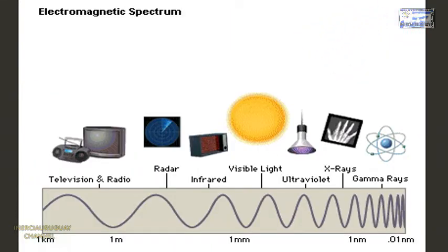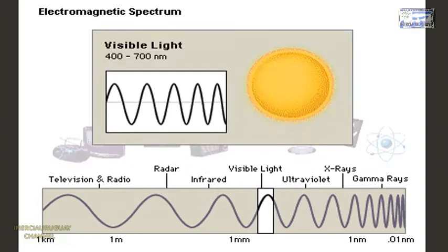Visible light represents only a narrow band of the electromagnetic spectrum, which includes many kinds of waves.